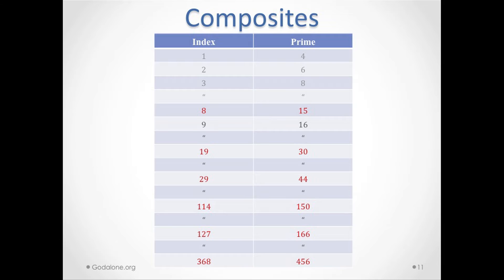We can tabulate the composites using a computer program, because since you don't know a relation between primes and the indices, you are also unable to guess — for example, what is the 368th composite — without writing a program. There is no relation, so you are also unable to do this for the composite. They are just as complicated as primes.